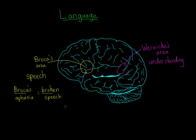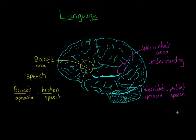When Wernicke's area, back in the temporal lobe, is damaged, you get Wernicke's aphasia, which is quite a different pattern of behavior than you get with Broca's aphasia. People have no trouble producing words — in fact, words kind of just tumble out of them — but the words that do come out don't make any sense.